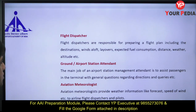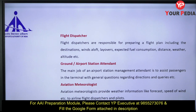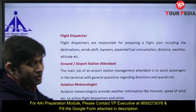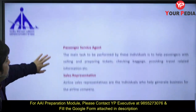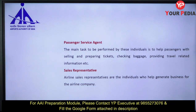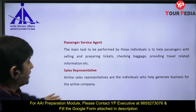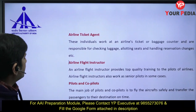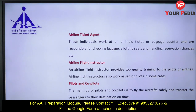Flight dispatchers are also part of the organization. Their role — which can be asked as an exam question — includes making the flight plan, deciding the destination and layovers, fuel consumption, distance to travel, weather, and altitude. Ground staff operate in a totally different mode. Aviation meteorologists work in the weather forecasting and prediction domain. Passenger service agents and sales representatives are also working in their respective areas.